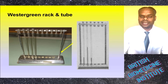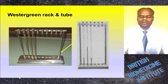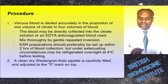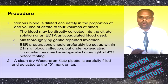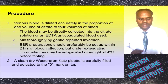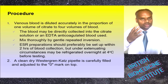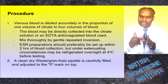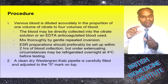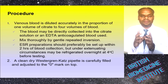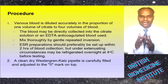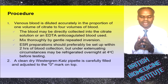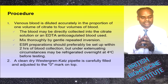This is a diagram of a Westergren rack and tube where the test is run. For the procedure, venous blood is diluted accurately in the proportion of one volume of citrate to four volumes of blood. The blood may be collected directly into the citrate solution or in EDTA anticoagulant. Mix thoroughly by gentle repeated inversion. ESR preparation should preferably be set up within two hours of blood collection, but under extenuating circumstances may be refrigerated overnight at 4°C before testing.